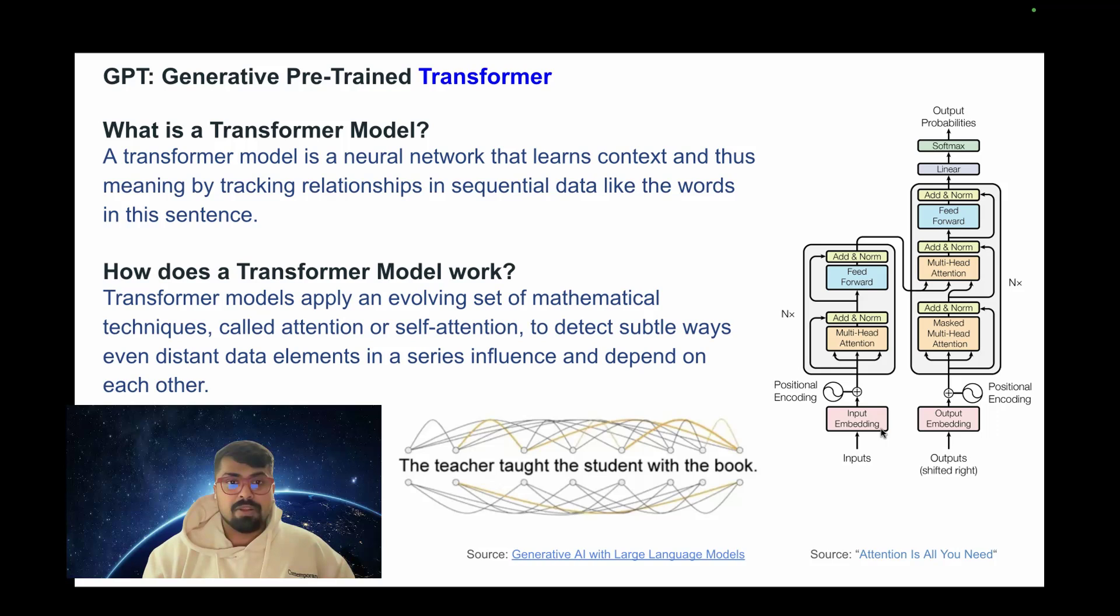A transformer model is a neural network that learns context and thus meaning by tracking relationships in sequential data, like the words in this sentence. It was first introduced in a Google research paper that came out in 2017 titled Attention is All You Need.